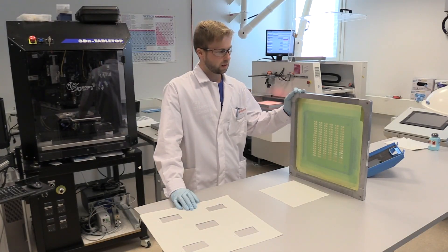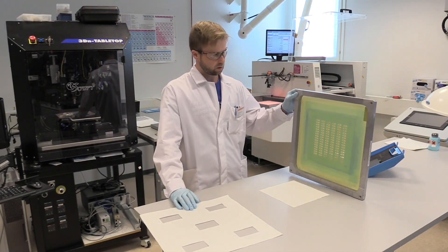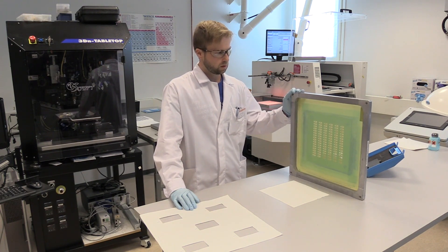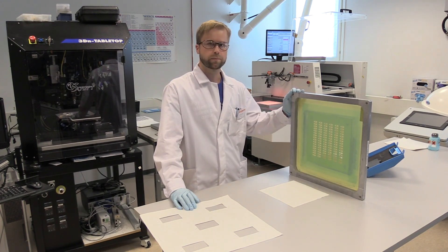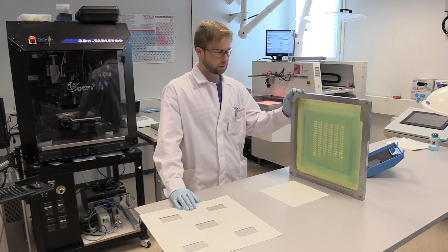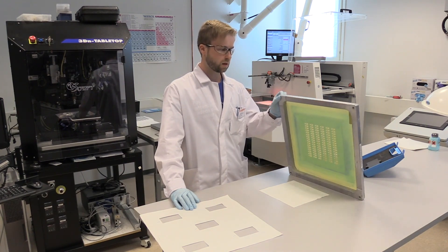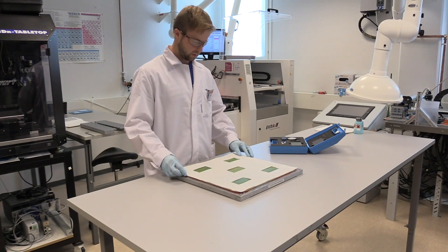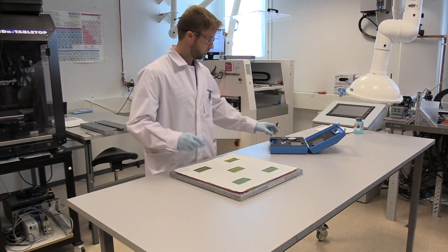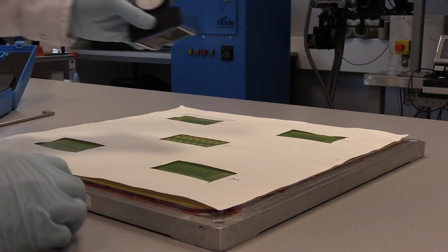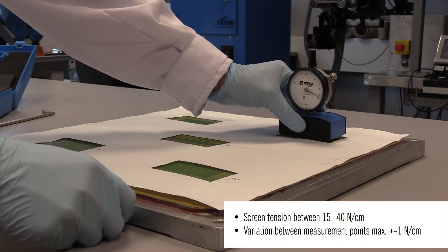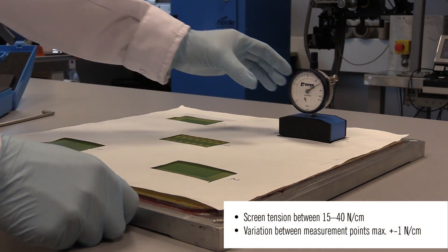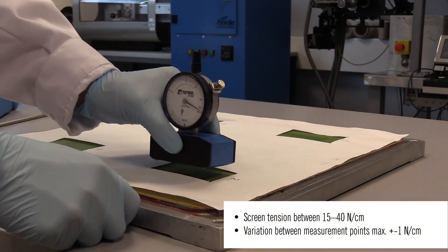Silkkipainamisessa tärkeimpiä työkaluja on painoverkko. Nyt tarkistetaan painoverkon kunto ja se miten se tarkistetaan on mitataan painoverkon kireys. Siihen on hyvä käyttää tällaista adapteria. Ja jotta kireys ei olisi varastoinnin aikana muuttunut, se on hyvä tarkistaa tämmöisellä tensiometrillä.